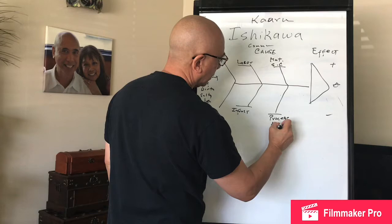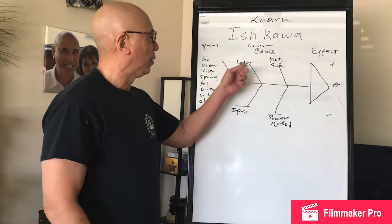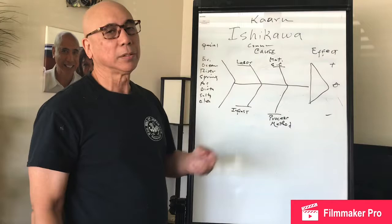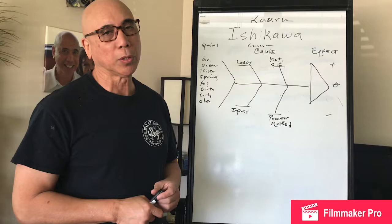Some people call them the five M's: man, machine, material, method, and mother nature. However you want to call them, they still build the fishbone.